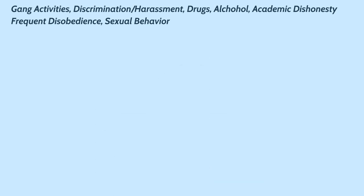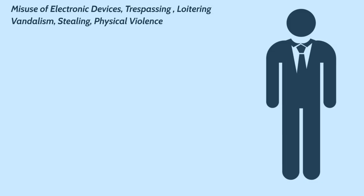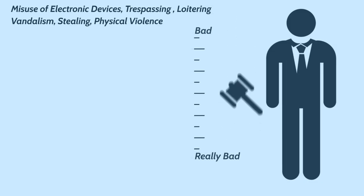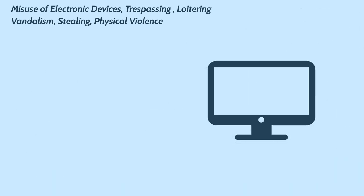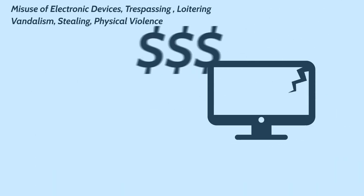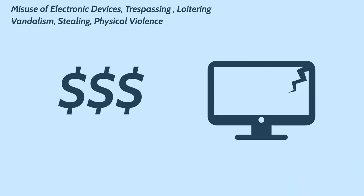School employees will report prohibited behavior to a school administrator who will base consequences upon the severity of the infraction and might use a continuum of consequences. Students who steal or damage school property will need to pay for damages or arrange to work off the cost.